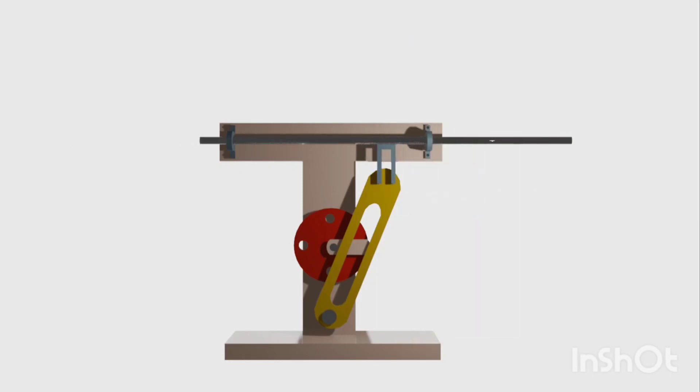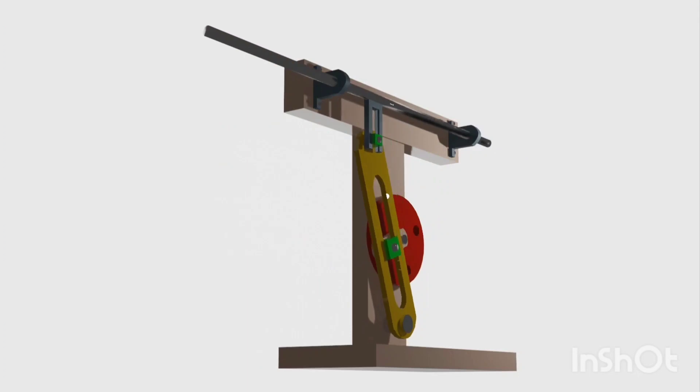Working principle. Similar to other quick return mechanisms, the Whitworth mechanism uses a crank and a slotted lever to convert the rotary motion of the driving source into reciprocating motion.